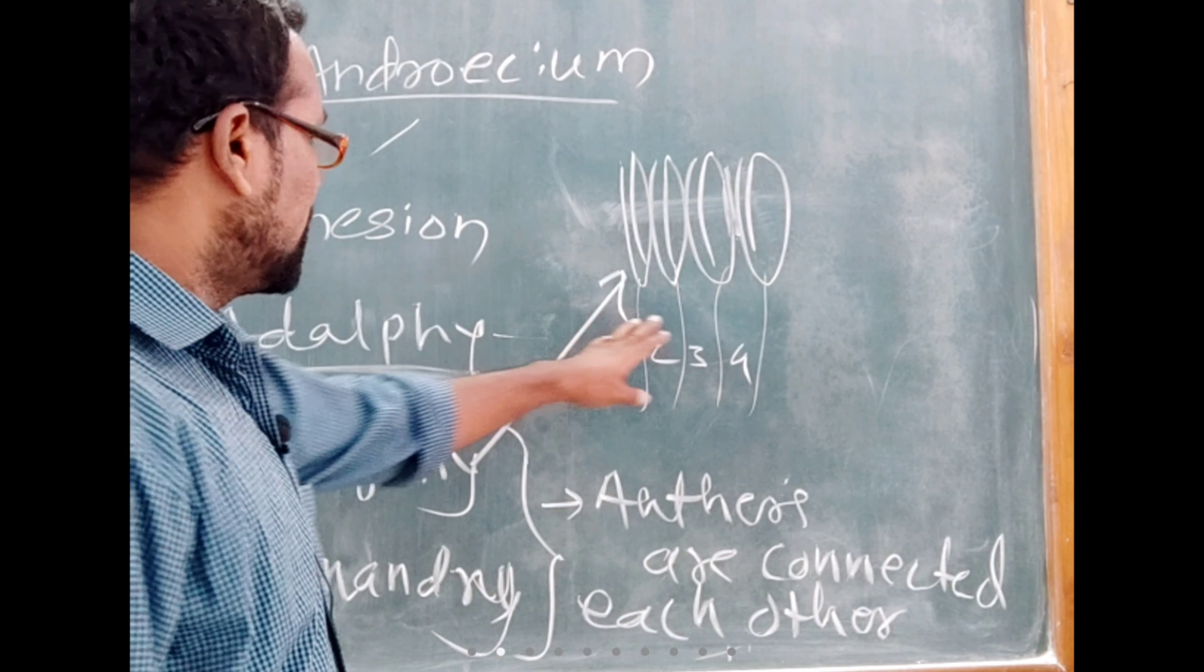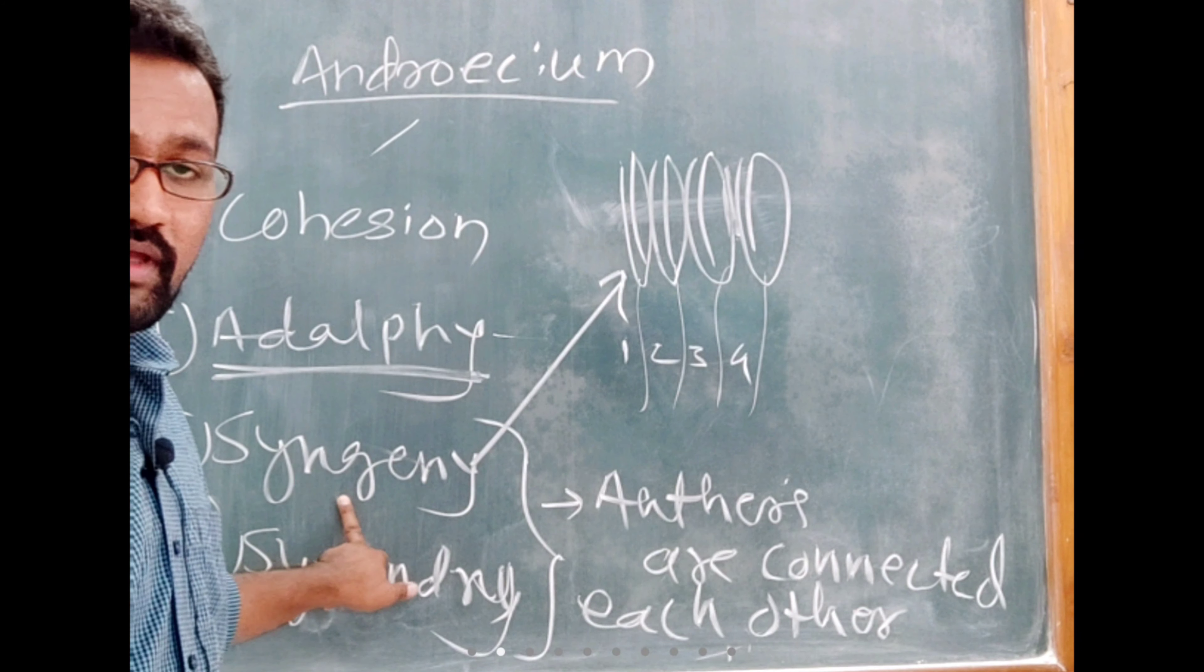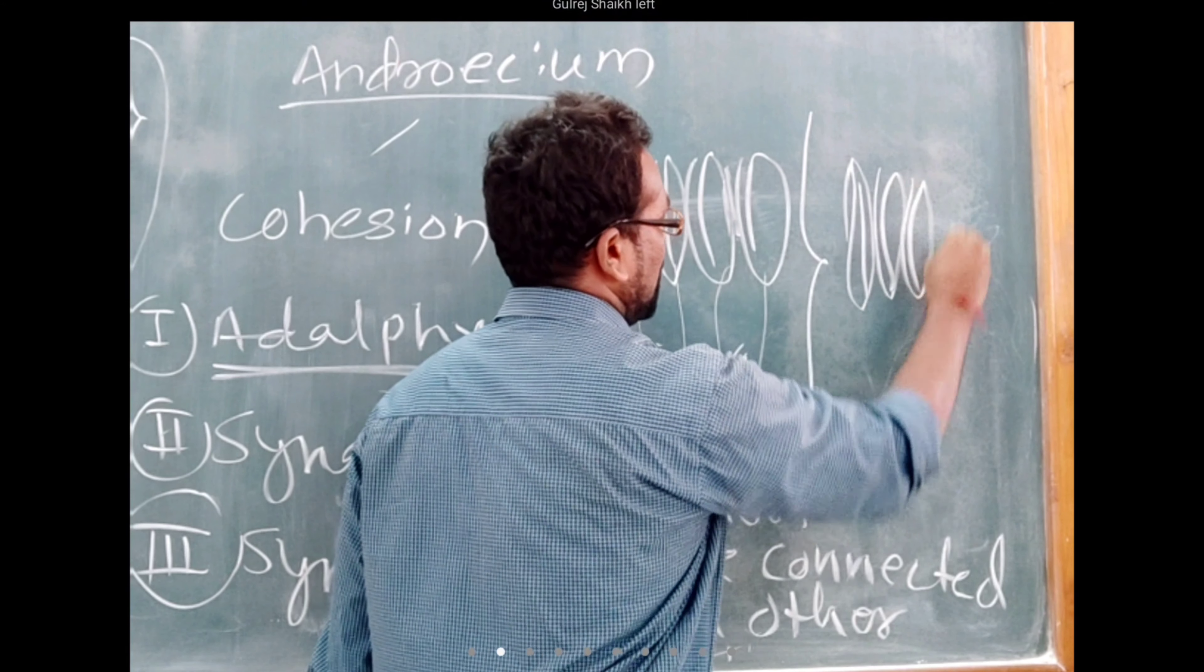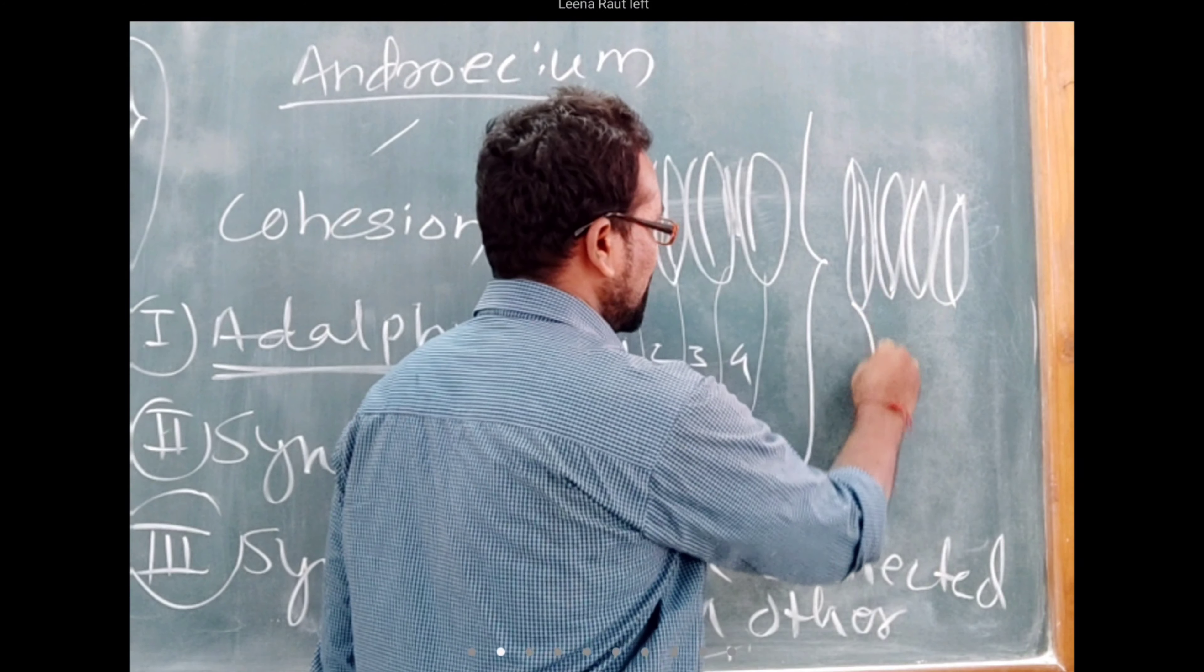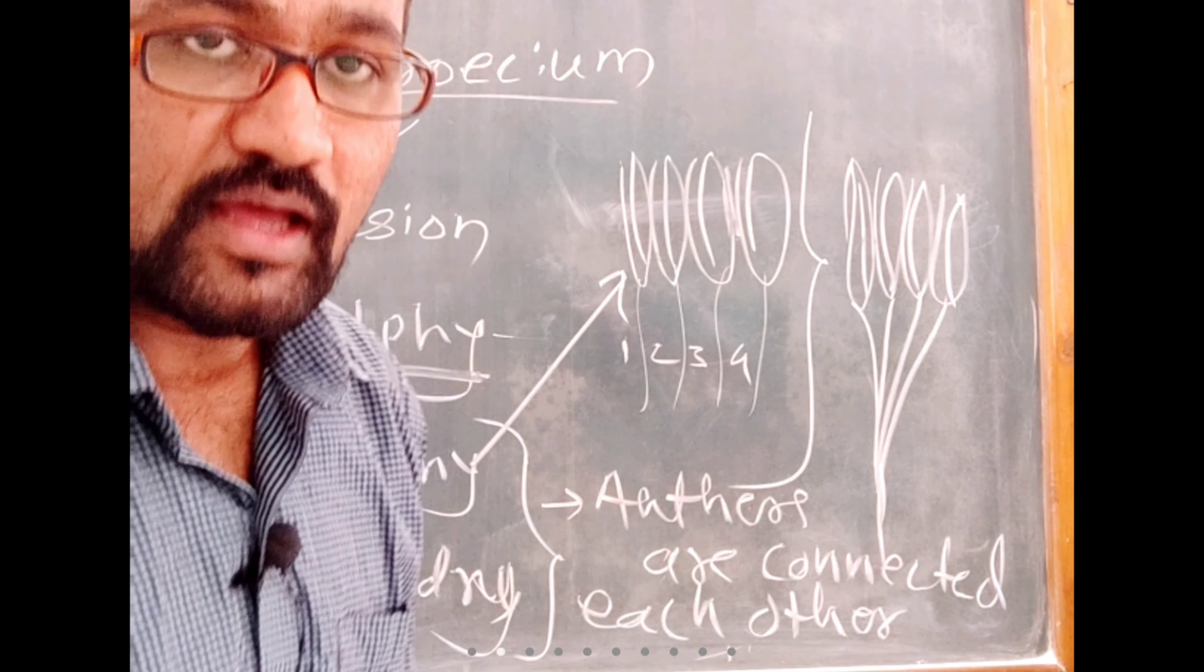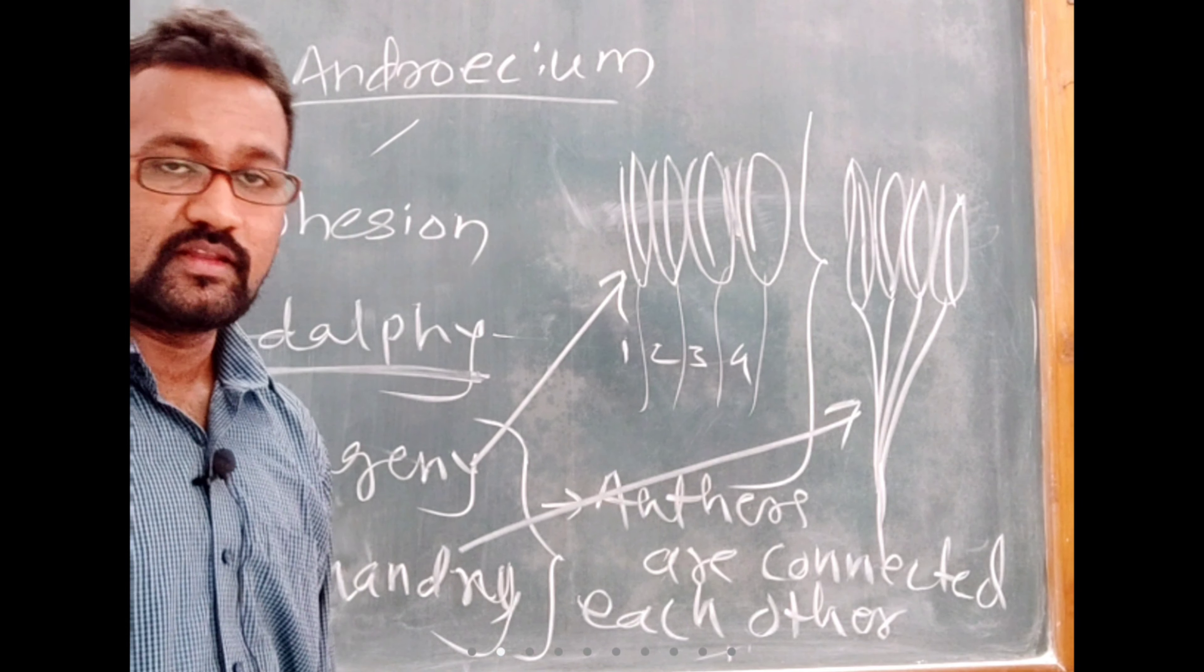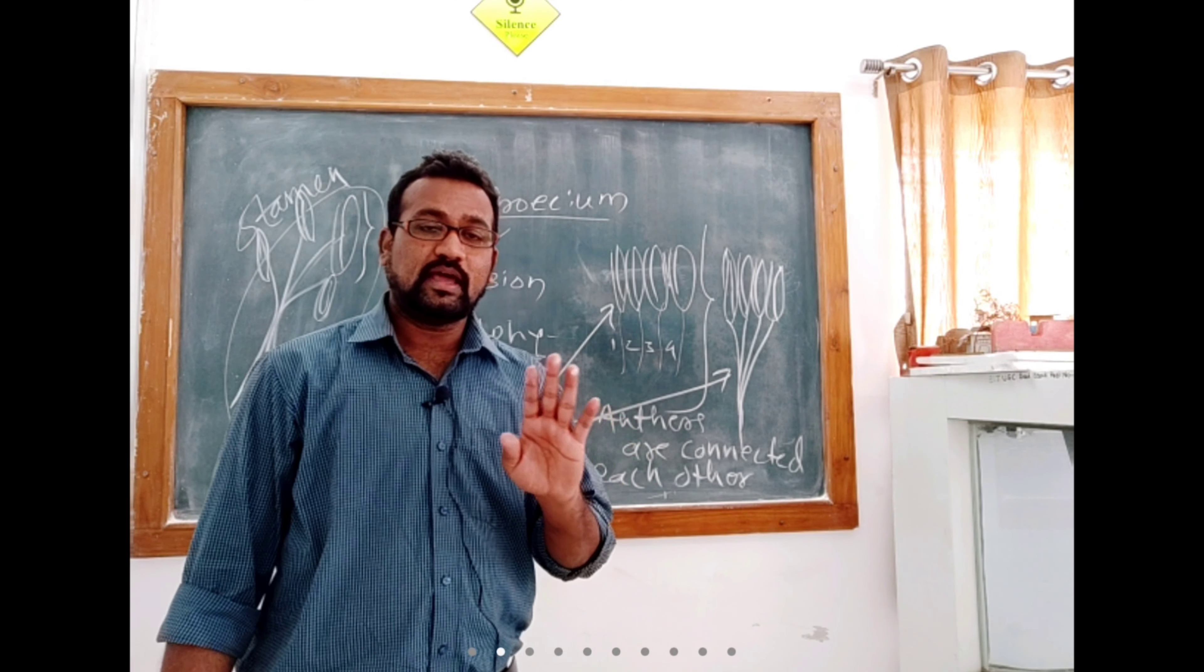When this condition exists, this condition we call Syngeny. In four stamens, when filaments are free and anthers are fused, it is known as Syngeny. You have to remember this. In another case, please observe carefully. One anther, another anther, another anther. Suppose four anthers are there, all anthers are fused and surprisingly their filaments are also fused. When all anthers are fused as well as their filaments are also fused, that condition is known as Synandry. Now tell me, have you understood or not?